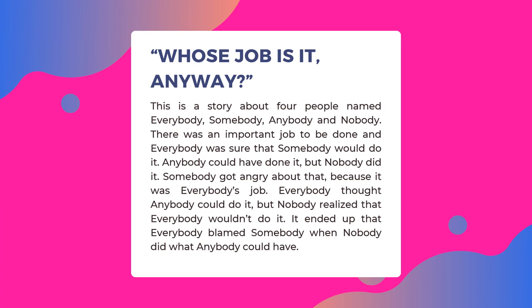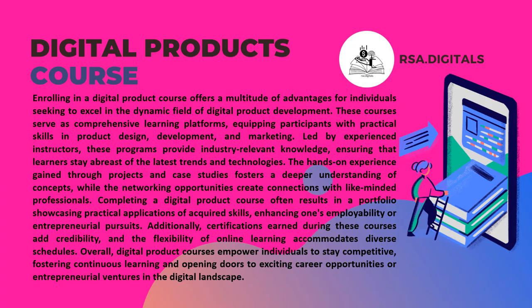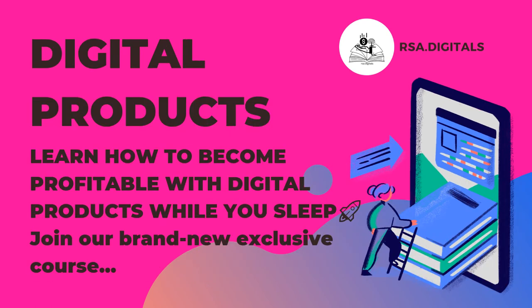Welcome to 'Making Money Online with Five to Six Digits Earnings Through Digital Products.' The speaker revisits the story of Everybody, Somebody, Anybody, and Nobody — emphasizing that there was an important job to be done, anybody could have done it but nobody did it, and everybody ended up blaming somebody when nobody did what anybody could have. The takeaway: take personal responsibility and take action with digital products.